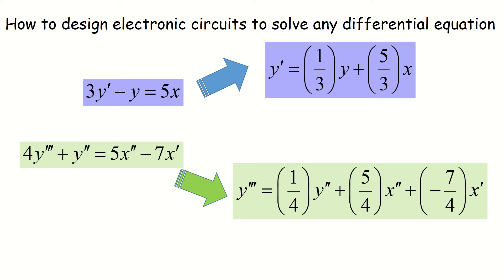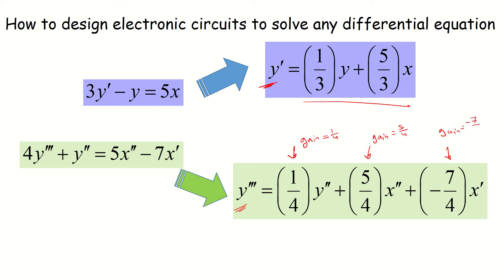I recommend always putting the highest order term on one side and the remaining parts on the right-hand side. For example, in the second example we have a third order differential equation, so we put the highest order — y triple prime — and the rest on the other side. Here the gain equals 1 over 4 for the first term, 5 over 4 for the second term (which is more than 1), and negative 7 over 4 for the third term.